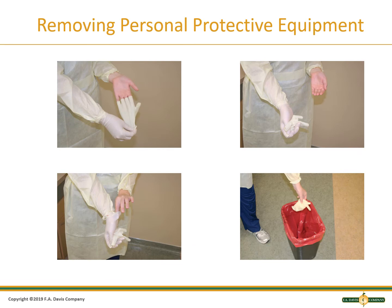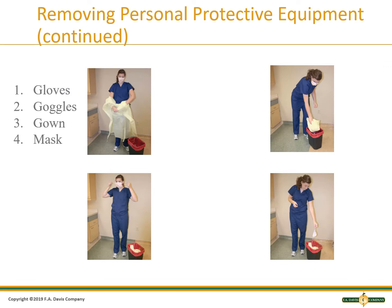The first step in doffing or removing PPE is to remove the gloves. Grab the outside of the wrist and pull it down, then ball up the dirty glove in the hand you pulled it off with. Next, put the finger of the uncovered hand under the dirty glove and remove it. See procedure 3-3 for full details. After removing the gloves, remove goggles by only touching the earpieces, then remove the gown and dispose of it, and last, remove the mask. The key principle is to remove the dirtiest item first.